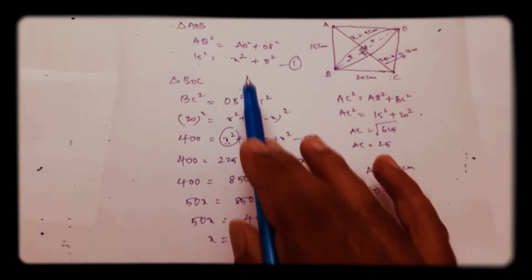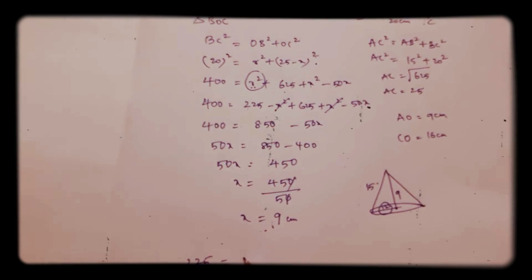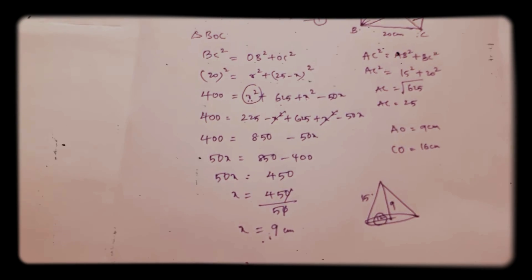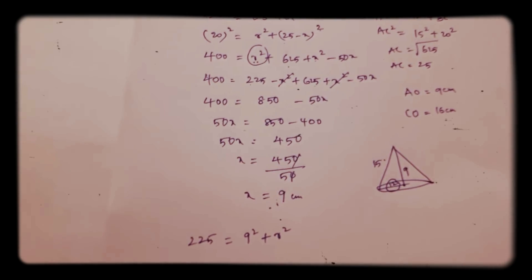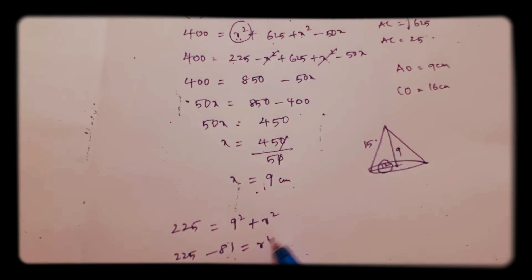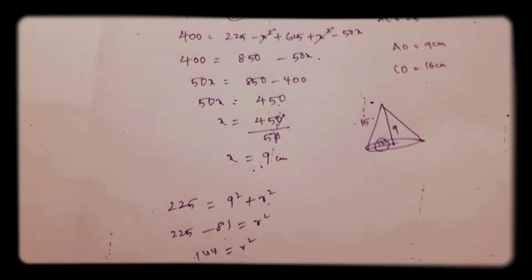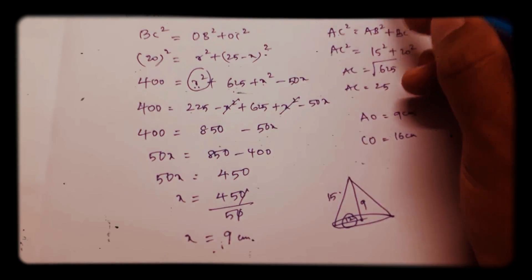Substitute here: 225 equals 9 square plus R square. 225, 9 square is 81, minus 81 is R square. 144 is R square, so R is 12. Radius of both the cones is 12.